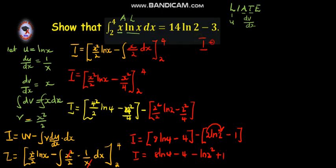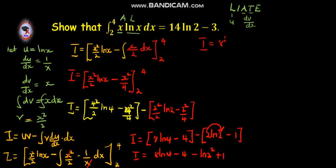So, I will be equal to 8 ln 4, minus 3, then minus ln 4. So, I will be equal to 8 ln 4, minus ln 4, minus 3.